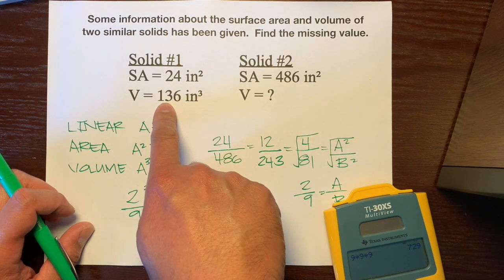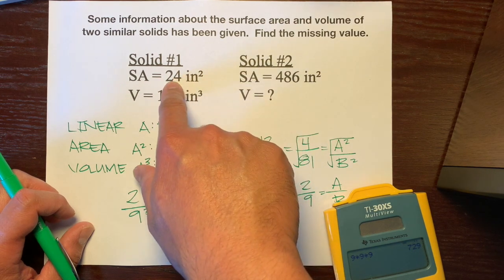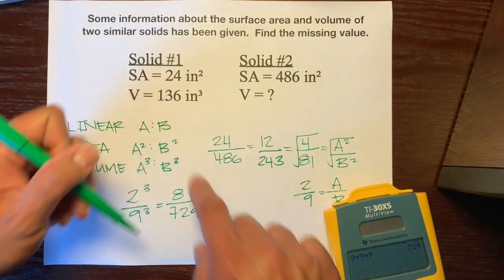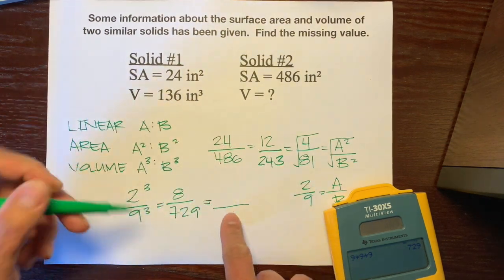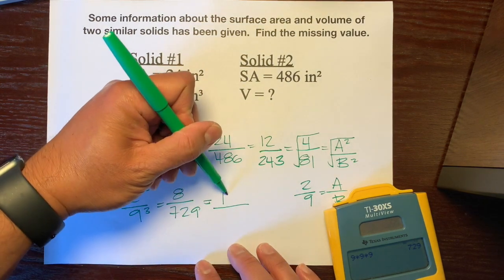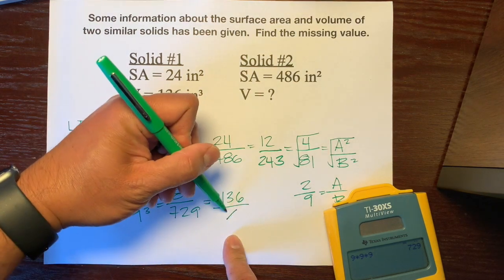So, the 136 comes from the smaller of the two solids because the surface area is smaller. So, we're going to write in this ratio, we're going to write this 136 in the numerator with the smaller number. And then, we'll just write x over here.